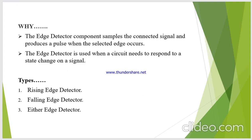The edge detector component samples the connected signal and produces a pulse when the selected edge occurs. It might be either posedge or negedge, or both posedge and negedge. The edge detector is used when the circuit needs to respond to a state change on a signal.